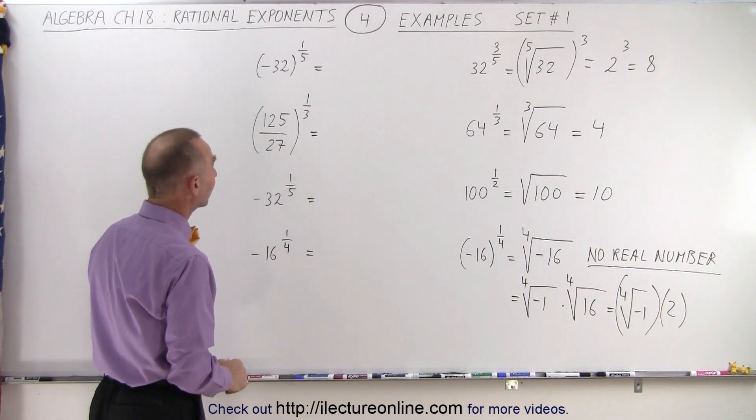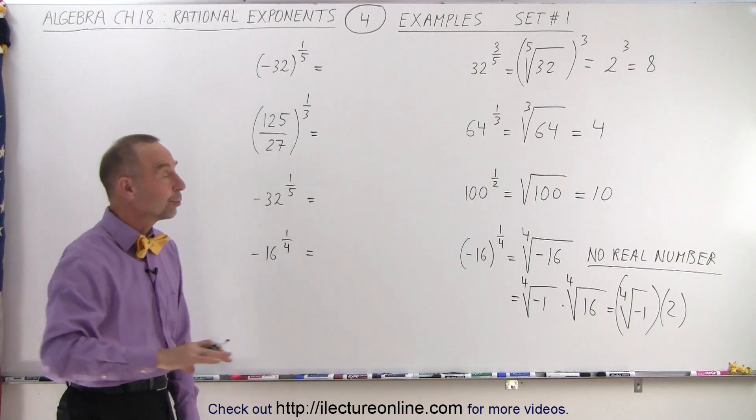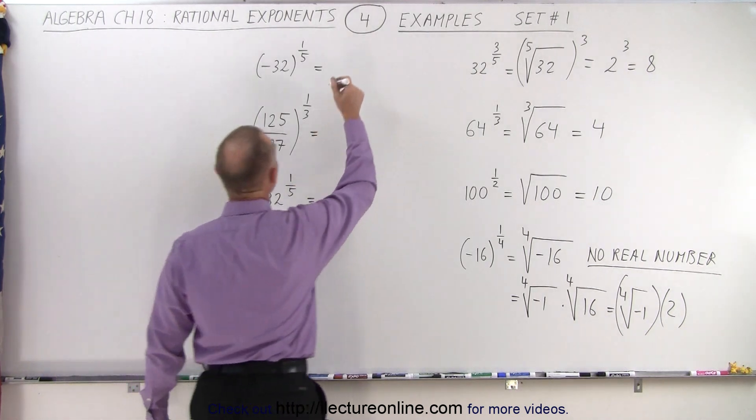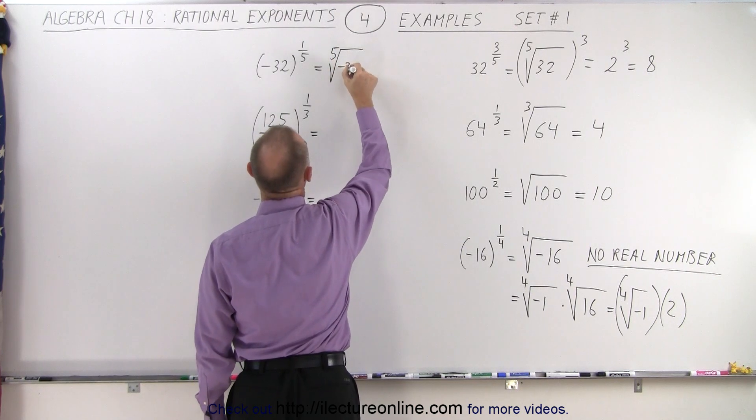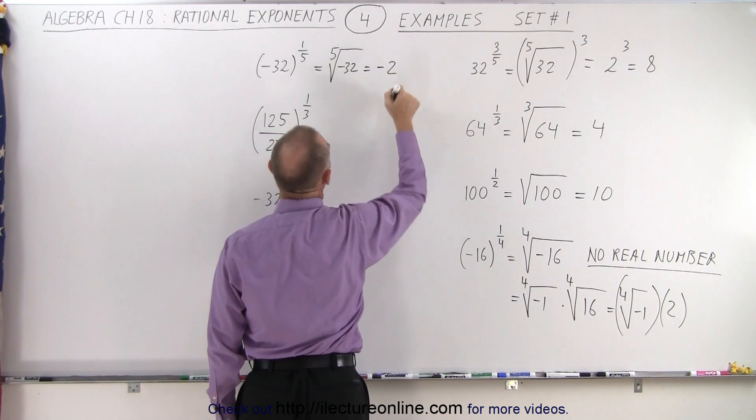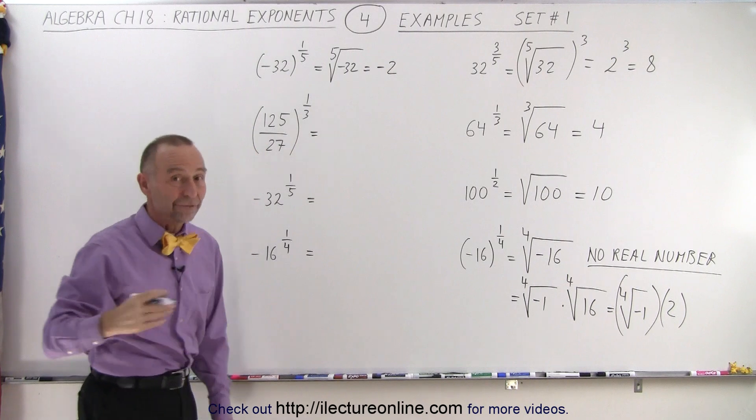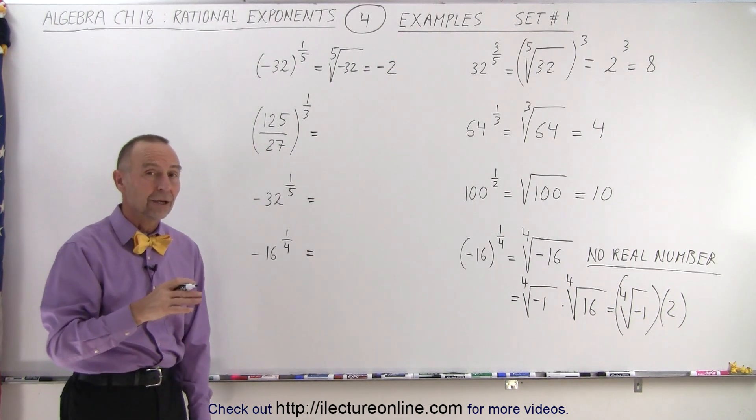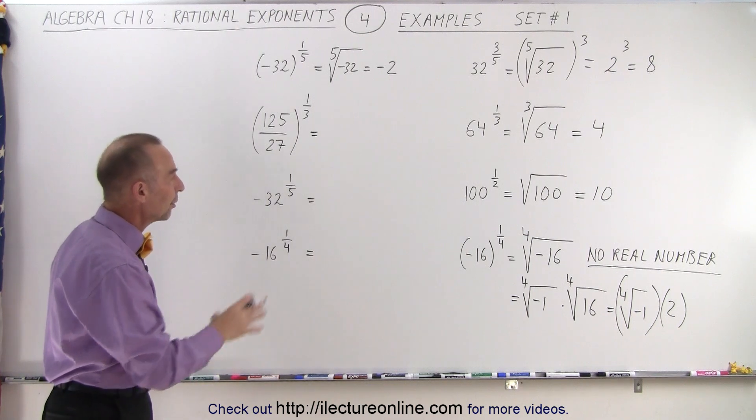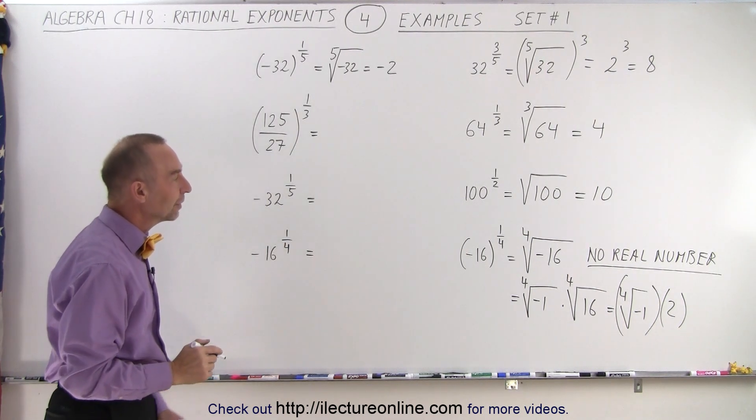All right, how about that? Well, there we're taking the fifth root of a negative number, and that can be done correctly. So we say the fifth root of minus 32 is equal to negative 2, because negative 2 times itself five times gives us a negative 32. So we can take an odd root of a negative number. We cannot take an even root of a negative number.